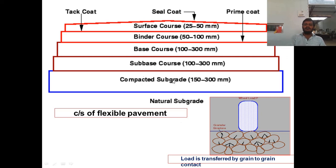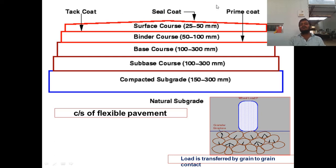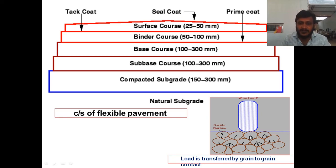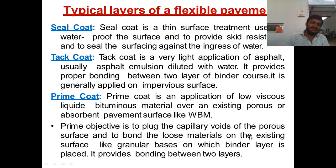A typical cross-section of flexible pavement with layer thicknesses shown: compacted subgrade, sub-base course, base course, then a prime coat, binder course, tack coat, surface course, and finally a seal coat on top. In grain-to-grain transfer, once a load is applied, one aggregate receives the load and transfers it to adjacent aggregates below, and so on — each aggregate acts as a grain, so grain-to-grain transfer takes place.